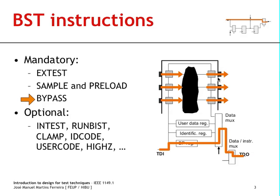The boundary scan cells will operate in transparent mode as shown here, so the output multiplexer will be connected to its upper input. This is actually the operating mode that is selected by default, so when you power up the circuit every boundary scan cell will start up to operate in this mode and the instruction register will automatically load the bypass instruction, selecting the bypass register between TDI and TDO.